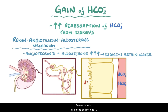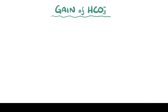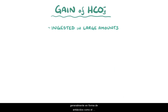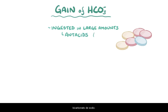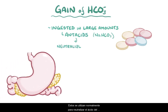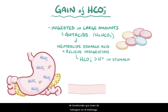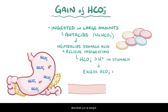In other cases, excess bicarbonate ions don't come from within our bodies at all, but are ingested in large amounts, usually in the form of antacids like sodium bicarbonate. These are typically used to neutralize stomach acid and relieve indigestion. Excess use of antacids, though, can result in more bicarbonate ions than hydrogen ions in the stomach, and the excess bicarbonate ions can get absorbed into the blood.